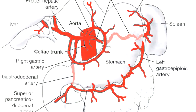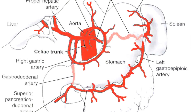Coming to the arterial supply of the stomach: the branches supplying the stomach are the left gastric artery, the right gastric artery, the left gastroepiploic artery, the right gastroepiploic artery, and the short gastric arteries. The bulk of supply is carried by the left and right gastric arteries and the left and right gastroepiploic arteries, forming an arcade between them. These are primarily branches of the celiac trunk.